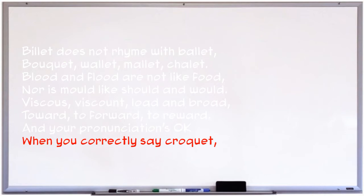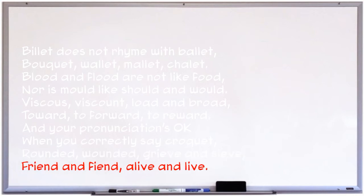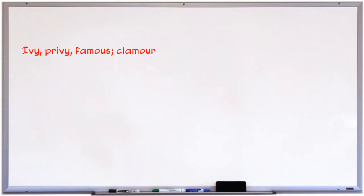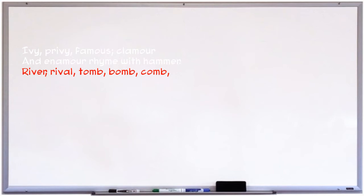And your pronunciation's okay when you correctly say croquet. Rounded, wounded, grieve, and sieve. Friend and fiend, alive, and live. Ivy, privy, famous, clamor, and enamor rhyme with hammer. River, rival, tomb, bomb, comb. Doll and roll, and some, and home.